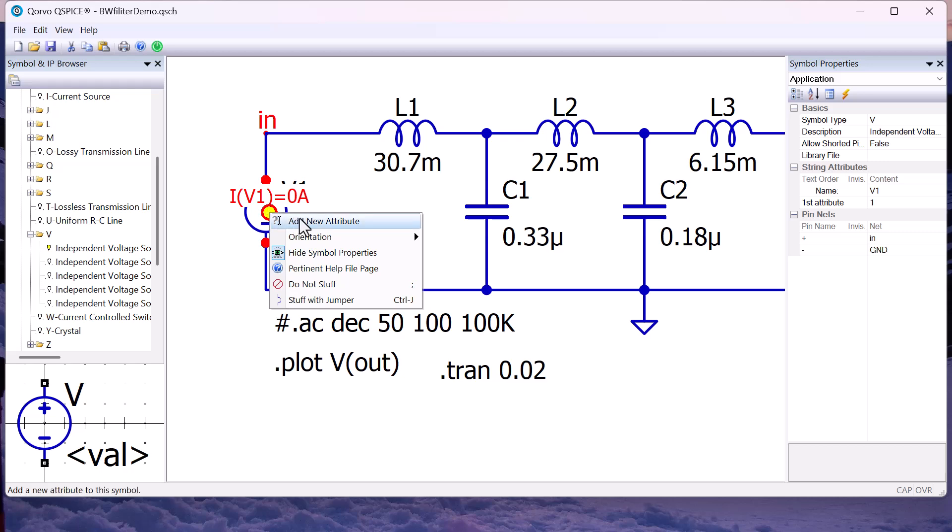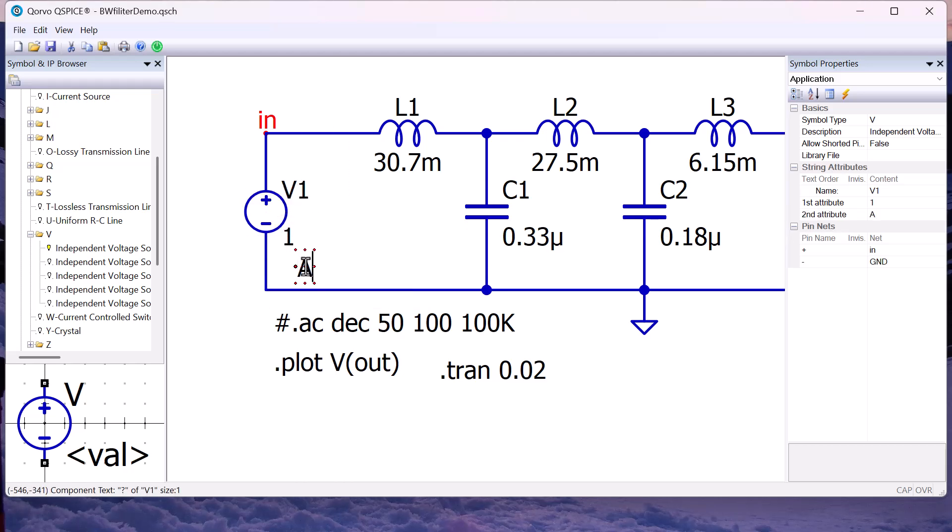Then add a new attribute. Make it AC space 1, not AC equals 1.